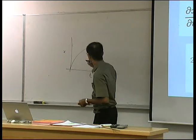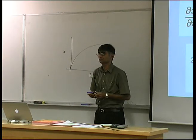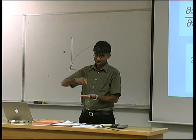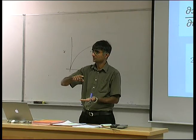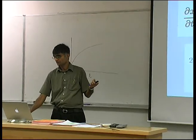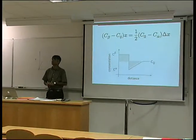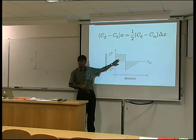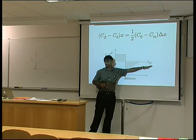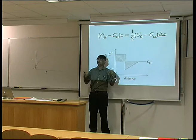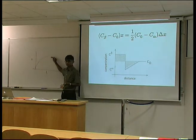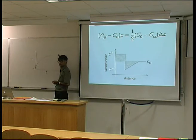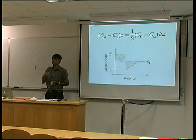Why do we have parabolic growth? As the ice becomes thicker, the heat has to diffuse to a larger and larger distance. As I remove more and more solute into the solid, the concentration gradient in the matrix becomes gentler and gentler, so the diffusion flux becomes smaller and therefore the velocity decreases. In all these diffusion-controlled processes, at least for one-dimensional growth, you will get parabolic growth — things will vary with the square root of time.